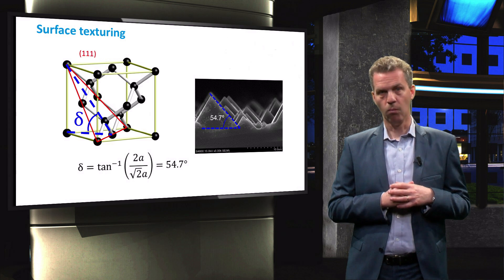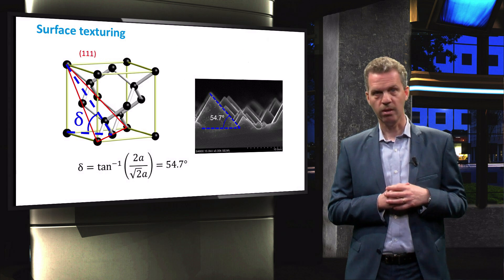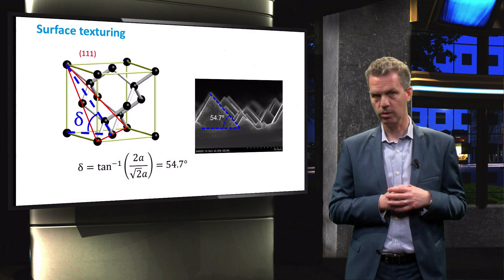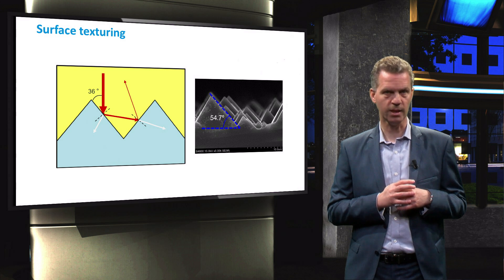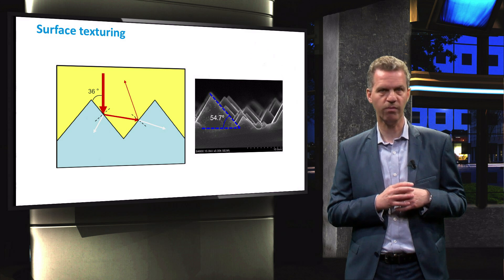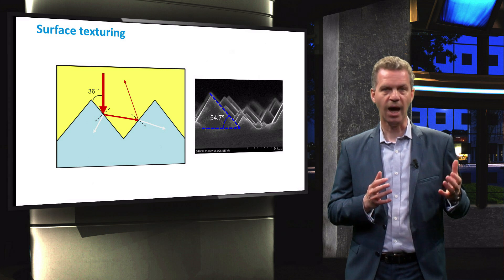The angle of the 1 1 1 plane with the horizontal is around 54 degrees, which explains why we used 36 degrees in the ray tracing example as the angle of incidence between the light and the textured silicon.